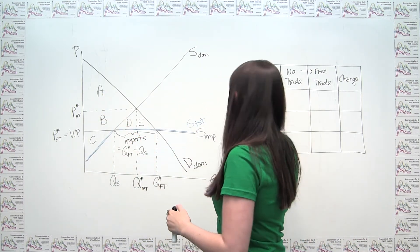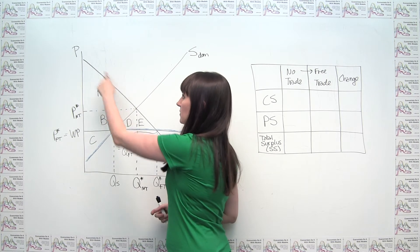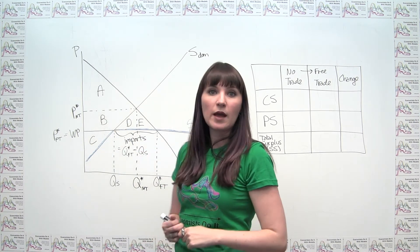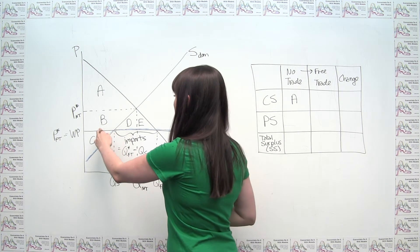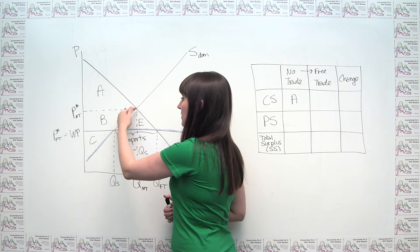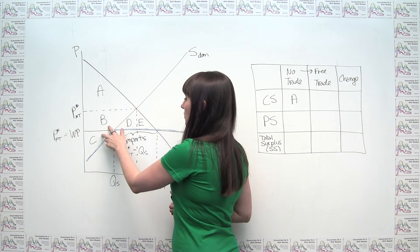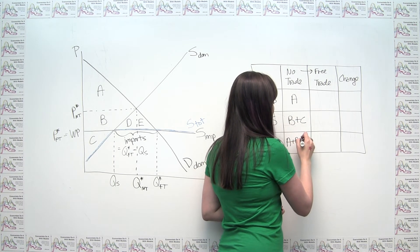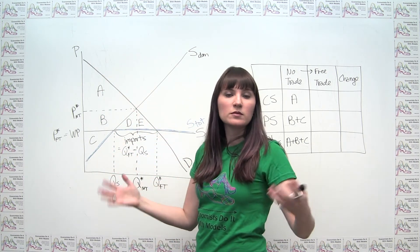Under no trade, consumer surplus is everything above the no-trade price and below the demand curve to the left of the no-trade quantity — so consumer surplus is just area A. Producer surplus under no trade is everything below the no-trade price, above the domestic supply curve, to the left of the quantity transacted — so producer surplus is areas B and C. Total surplus under no trade is A plus B plus C, which is just the big triangle we've calculated for total surplus at every stage up until this point.